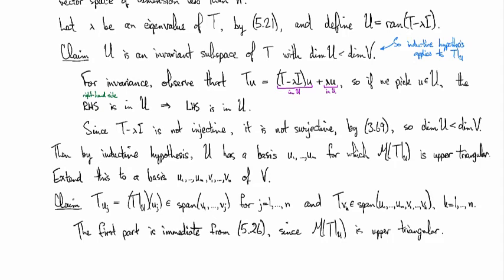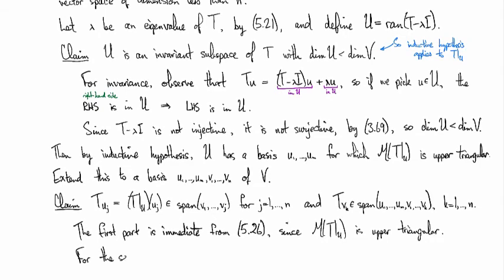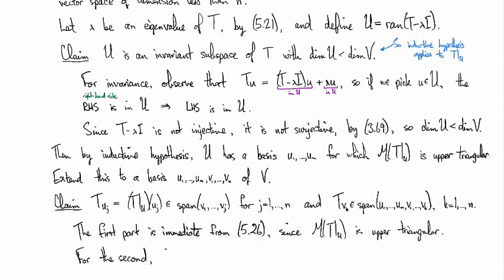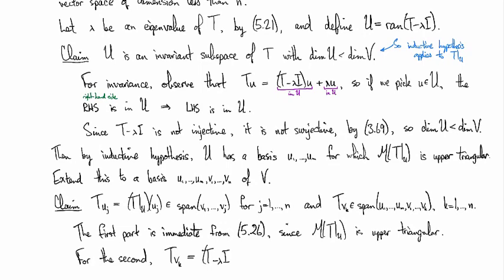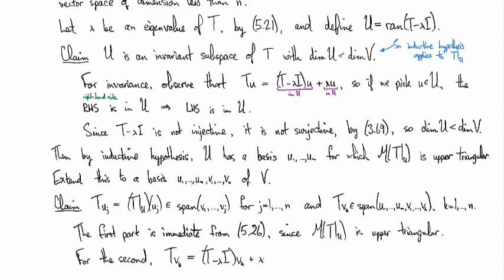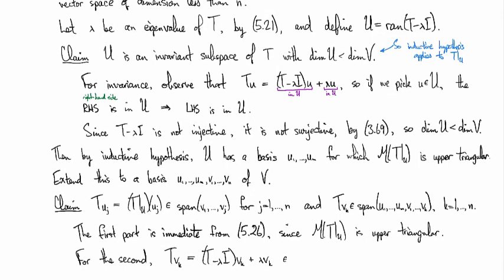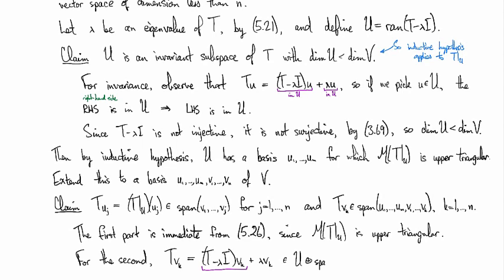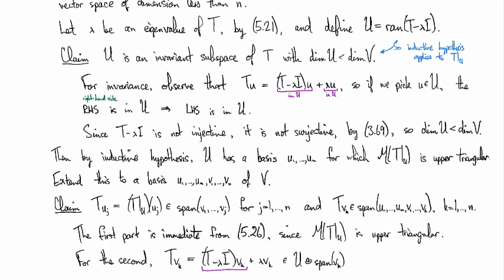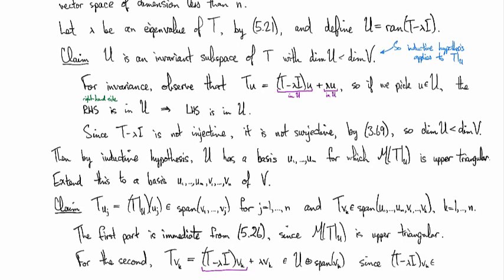Okay. So what about the vk's? Well, so for the vk's, if we look at Tvk, again we use the same sort of trick where we break this down as T minus lambda I vk plus lambda vk. And then you can see that this is an element of, well first off, this thing here is by definition in the range of T minus lambda I, so that means that it's in U. And then we know that the other part is in the span of vk.